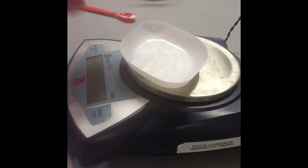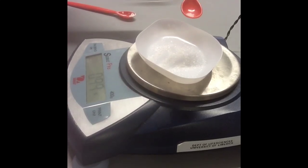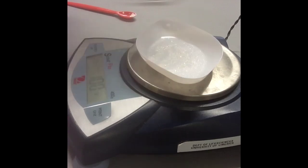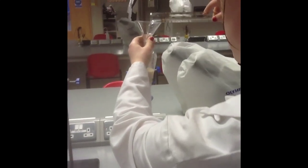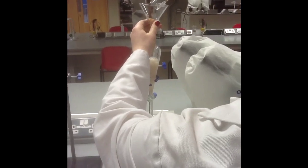For the next procedure we need to create a 1% sucrose solution. To do this we weigh out 1 gram of sucrose. This will be added to 100ml of water. Pour 50ml of the sucrose solution into each separating funnel.